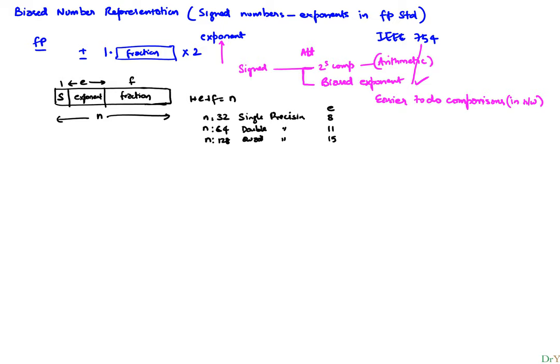For a given e bits, the range of values we can represent goes from 0 up to 2 to the power of e minus 1. For example, if e equals 3, we can go from 0, 1, 2, 3, 4, 5, 6, and 7 — those are the eight values.